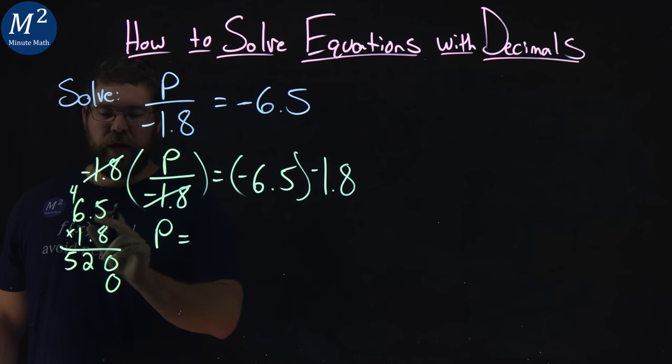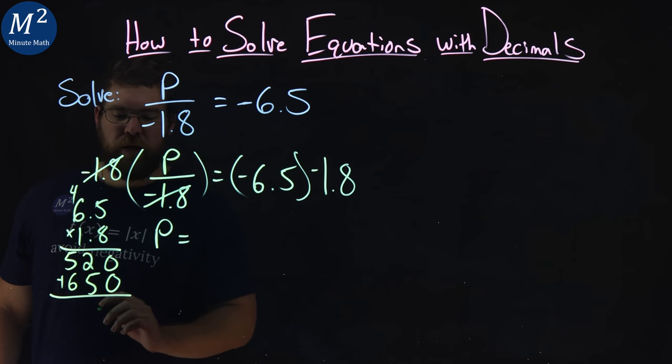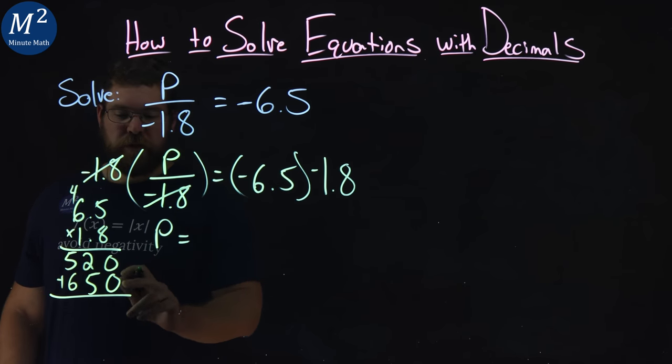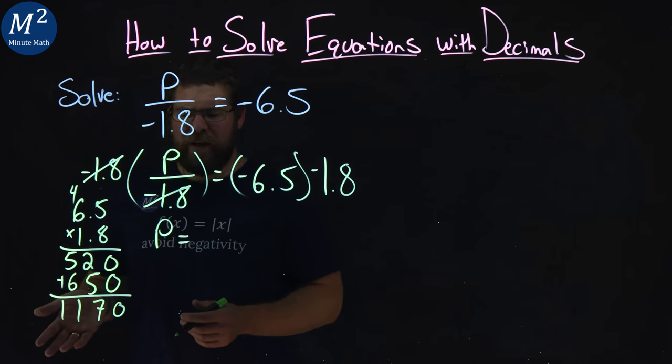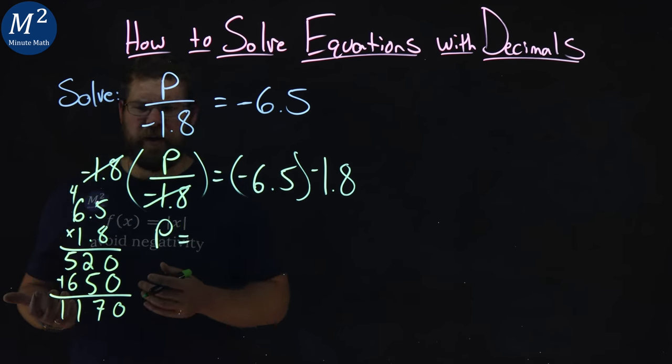Place value here for the 0, and now we deal with the 1. 1 times 5 is 5, and 1 times 6 is 6. We add the two numbers together. 0 and 0 is 0, 2 and 5 is 7, and 5 and 6 is 11. But don't worry, 1170 doesn't seem like the right answer.